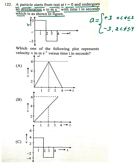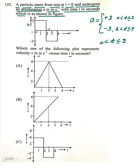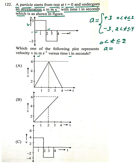Now, in between t=0 to t=2 seconds, a is plus 3, and initial velocity u is equal to 0. Clear or not? Initial velocity is 0.